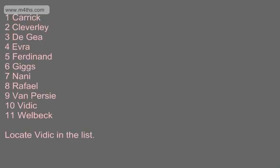What we're going to do is look at implementing a binary search and some of the key features. We've got here a list of Man United players in alphabetical order: Carrick, Cleverley, De Gea, Evra, Ferdinand, Giggs, Nanny, Raphael, Van Persie, Vidic and Welbeck. We're asked to locate Vidic in the list and we're going to use a binary search to do this.